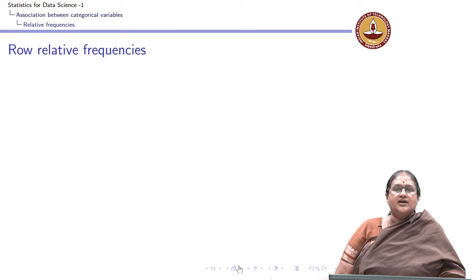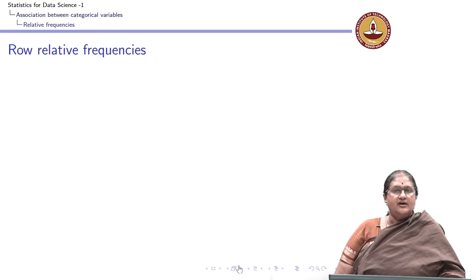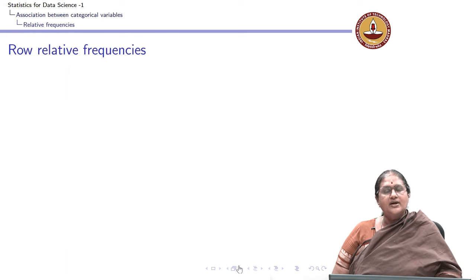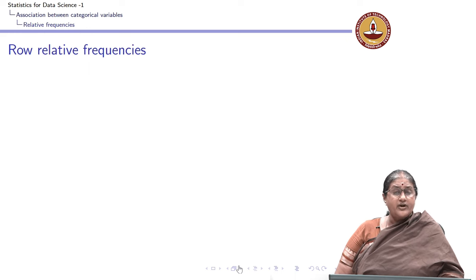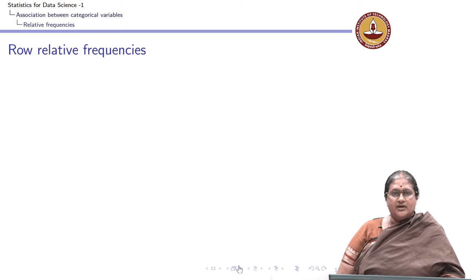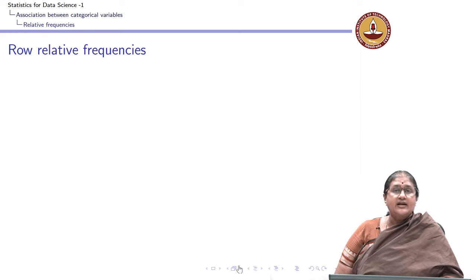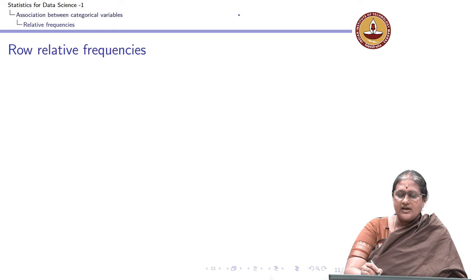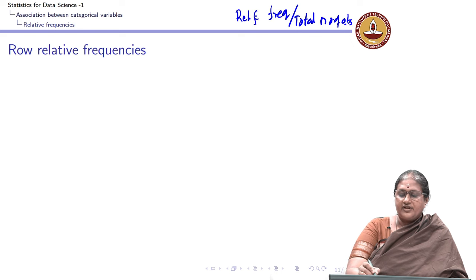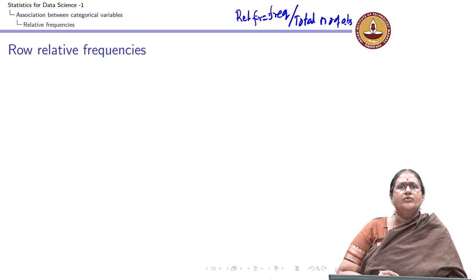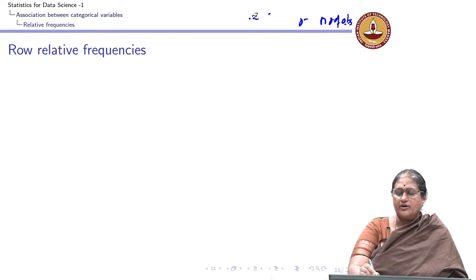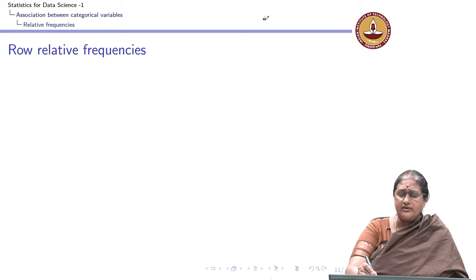We have seen how to construct a contingency table, or in other words, how to summarize bivariate data where both variables are categorical in nature. Now we introduce a very important concept: the concept of relative frequency. We introduced this when we looked at a single categorical variable — recall that relative frequency was simply frequency divided by the total number of observations.